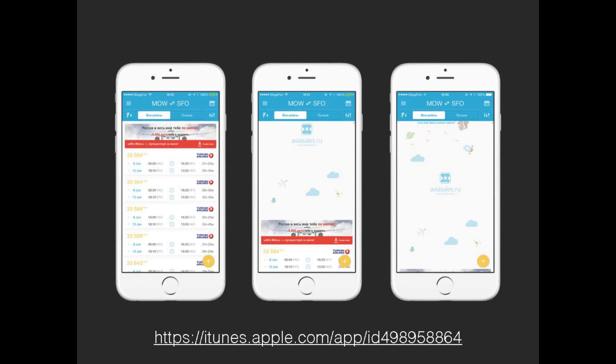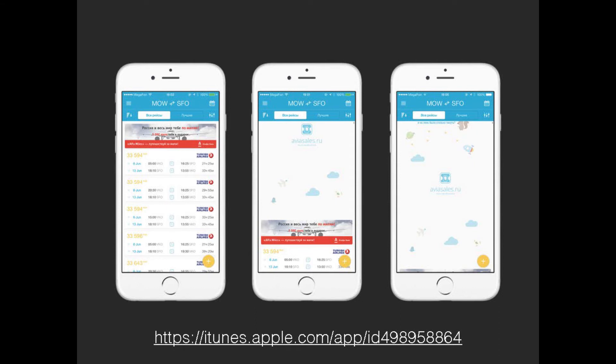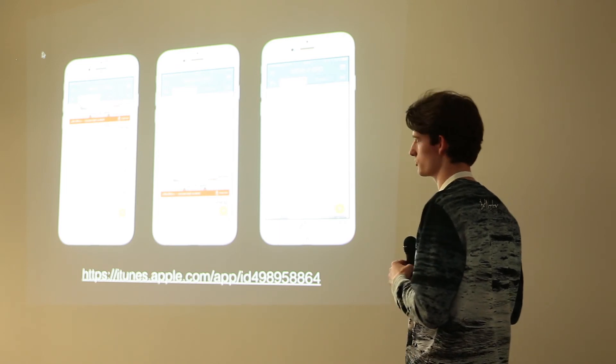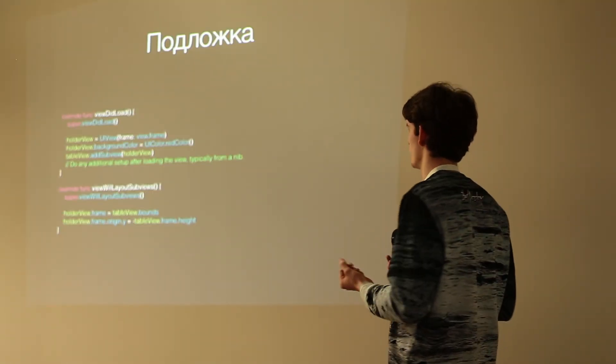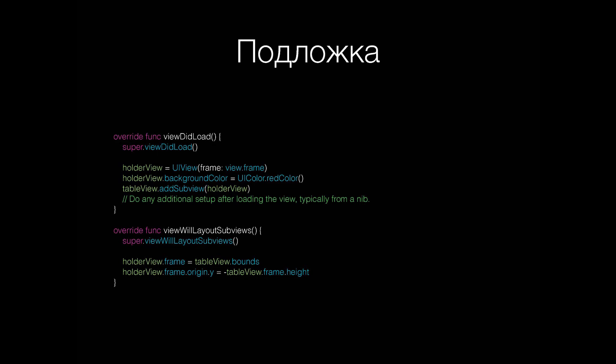Следующий сценарий — когда у вас есть подложка сверху. Я взял, например, приложение Aviasales: если долго-долго мотать, там появятся надписи. Это как пасхалка разработчиков, но такие паттерны часто вешают, особенно учитывая, что первую половину экрана открутить несложно. Как реализовать подложку? Я просто создаю view и добавляю на свою таблицу. В viewDidLoad создаю holderView, даю ему красный цвет — это может быть imageView с заглушкой. В методе layoutSubviews отслеживаю рамку.